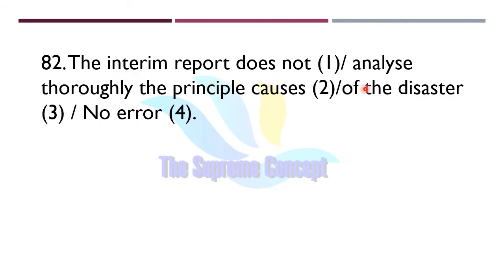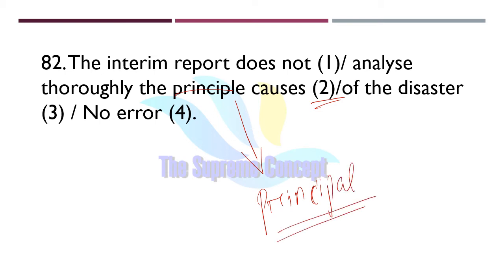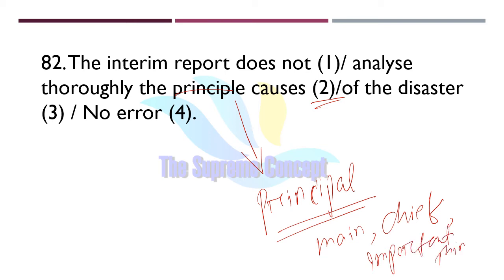Question number 82: 'The interim report does not analyze thoroughly the principal causes of the disaster.' The error lies in part number two — instead of 'principle', we will use 'principal' — P-R-I-N-C-I-P-A-L — which means the chief or most important thing. 'Principle' means moral conduct. Here, 'principal causes' means the main causes of the disaster.